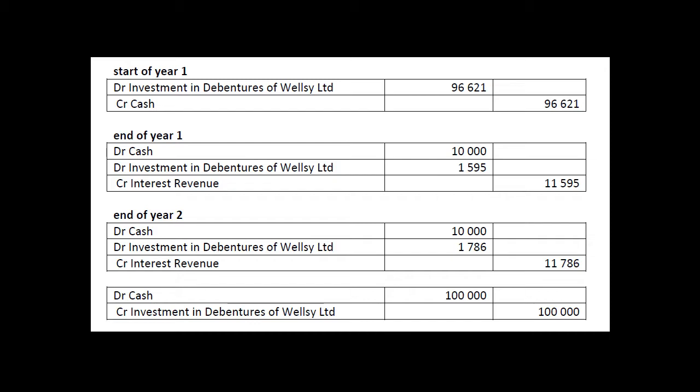Repeat the process: we've got the coupon payment, we've got the calculation from the second line, and we've got the balancing item. Once you've got into the swing of things, it's just a matter of stepping through it. At the end of it all, Wellesley repays the $100,000 — you debit cash for the final payment and you de-recognize the investment in the debenture. We've made some money; Elscoff has got some interest revenue, got his cash back and a little bit more, and there's no debenture left on the balance sheet.